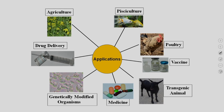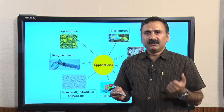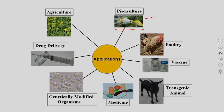Biotechnology has applications in diversified fields. It has application in pisciculture, where you can increase the productivity of fishes in a pond. Moreover, with genetic engineering and other biotechnology principles, you can develop ornamental fishes, increasing their market demand. Biotechnology also contributes to poultry — with vaccines and diagnostic tools, you can control diseases in poultry farms and increase productivity.